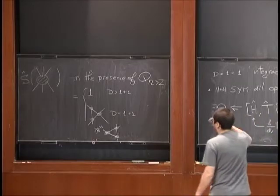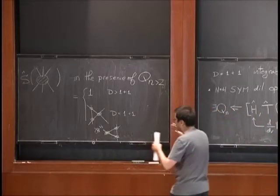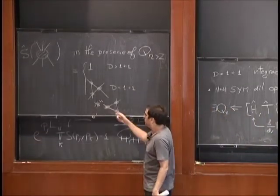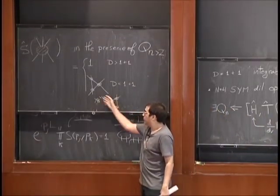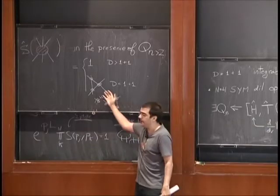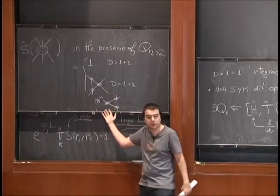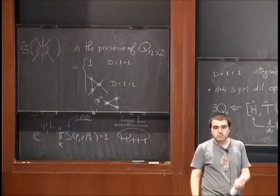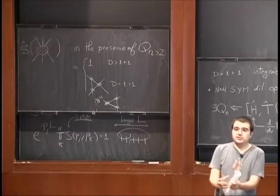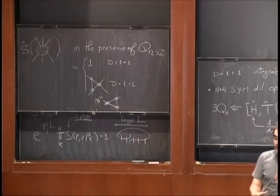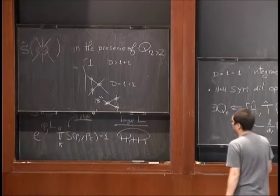Three-body scattering happens in a factorized way as a sequence of two-body scattering events. We could act with this charge in different ways, and in this way we saw that the order in which particle scattering occurs is not important. This is what was called the Yang-Baxter relation, which, as we will see today, can be very constraining when we try to find the S-matrix of some quantum field theory.